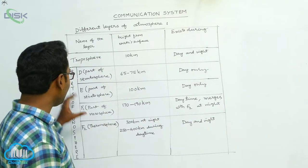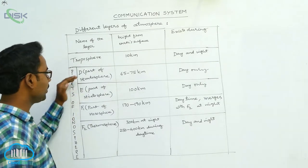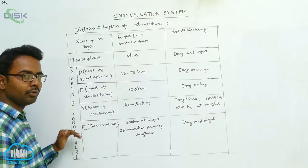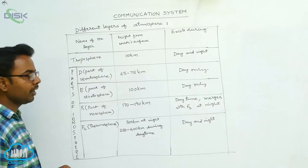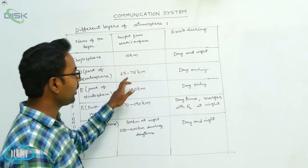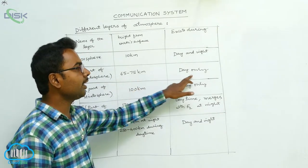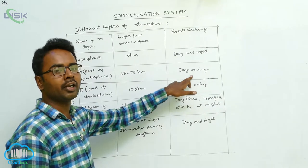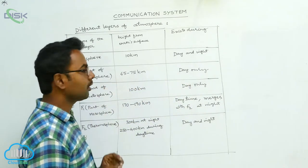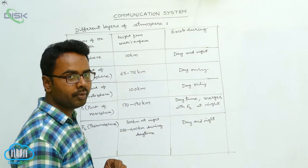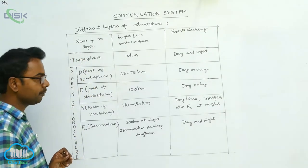In the ionosphere there are four parts: D, E, F1, and F2. D is the part of stratosphere. It is approximately at a height of 65 to 75 km. It exists during daytime only — at night time there is no D part in the stratosphere.